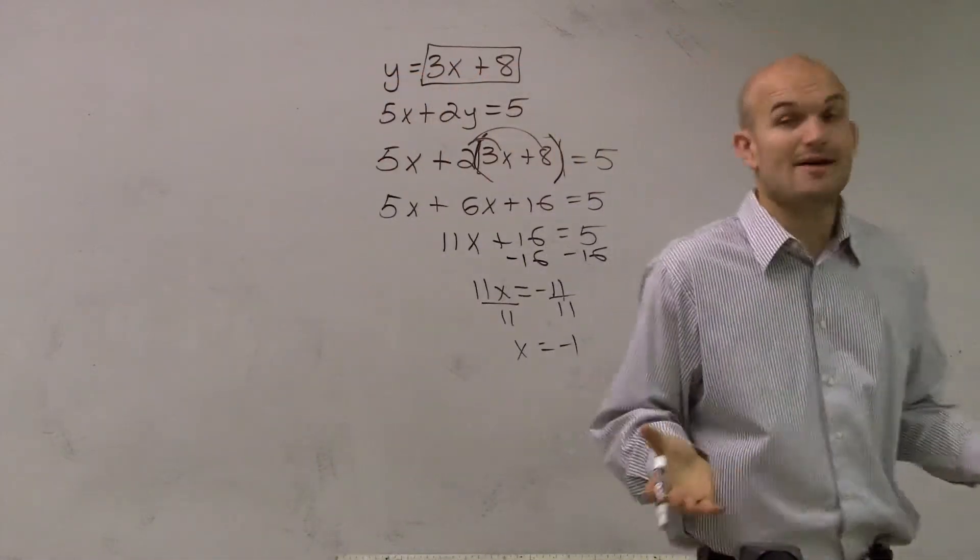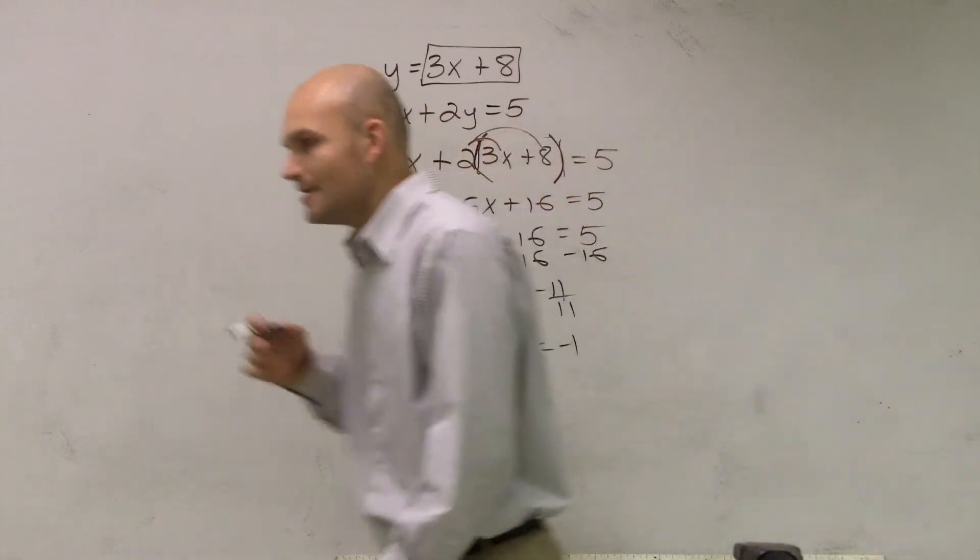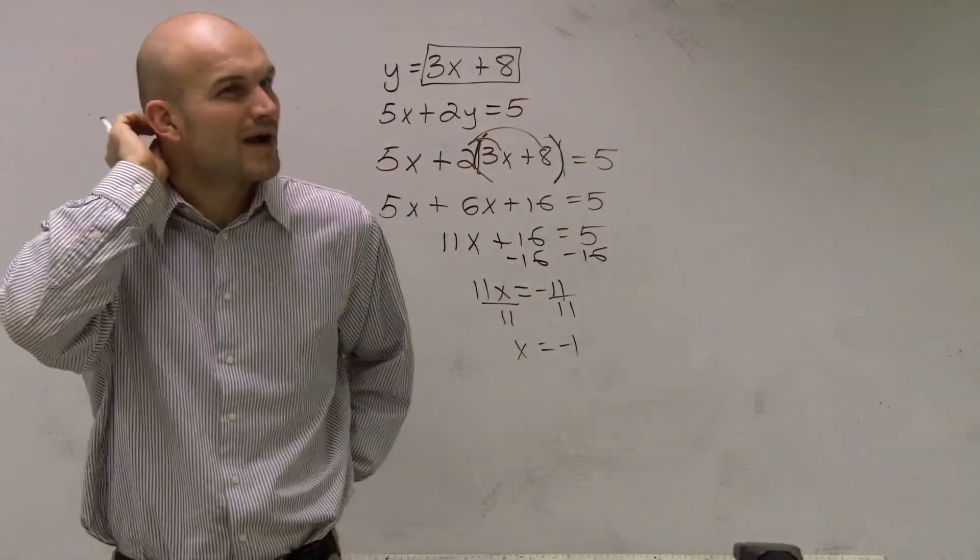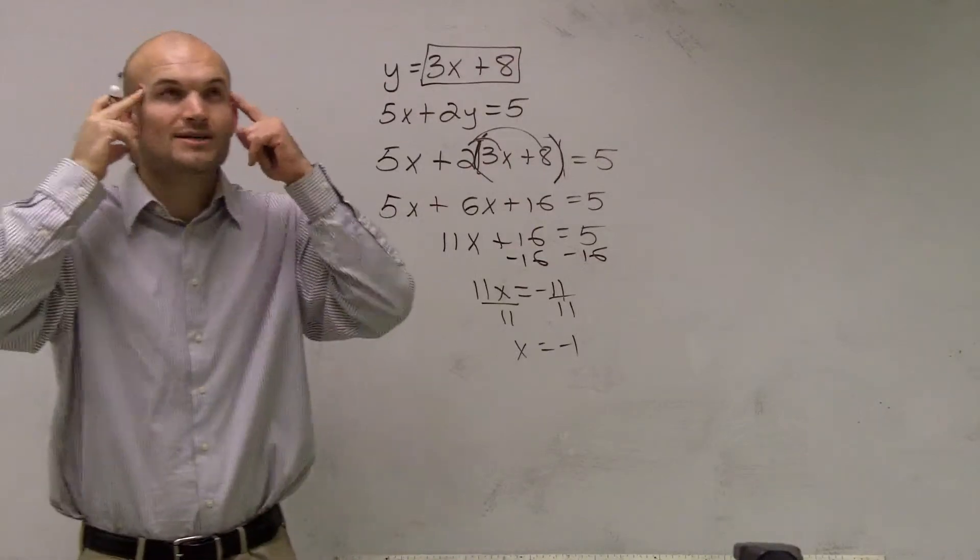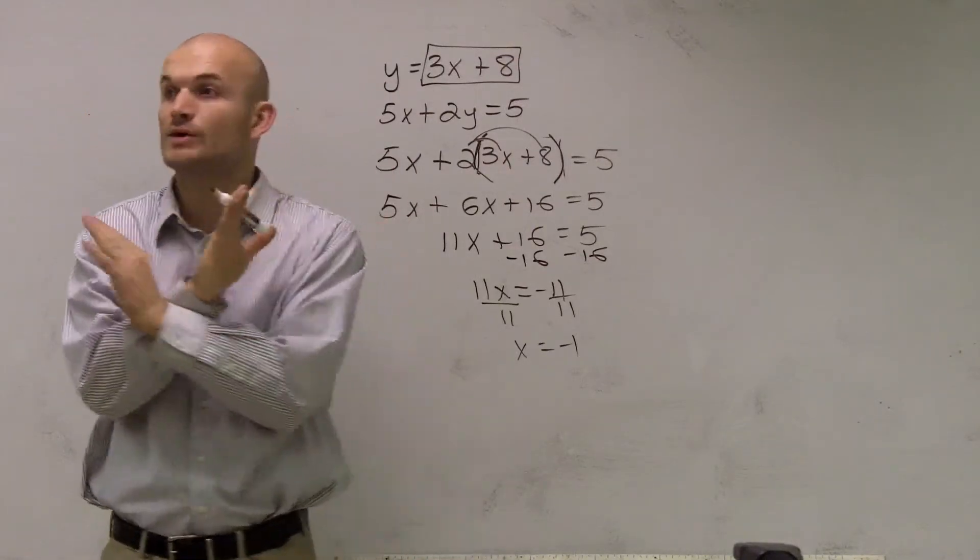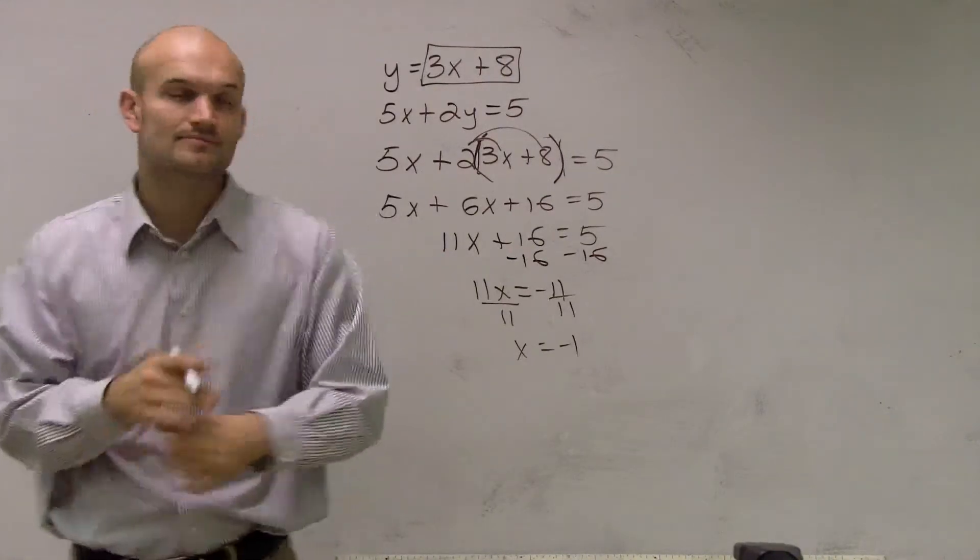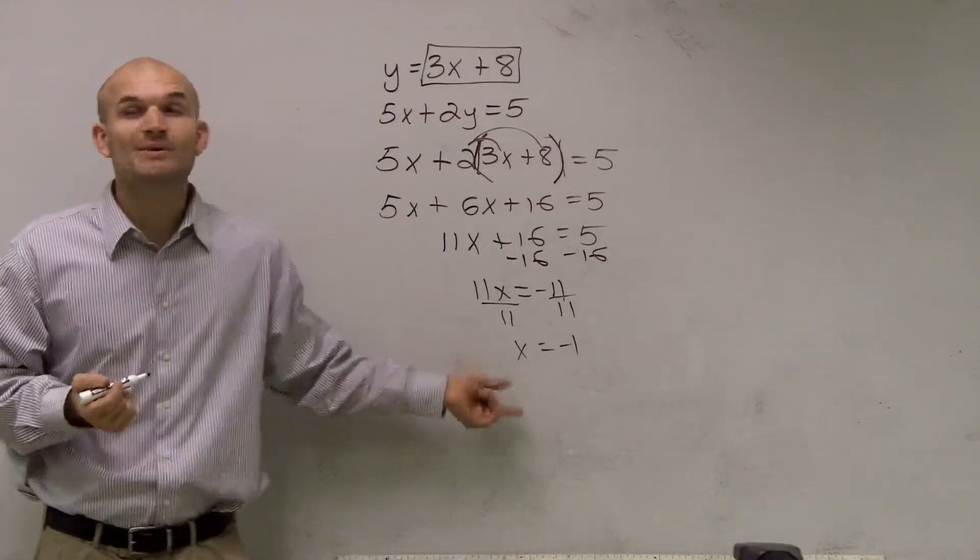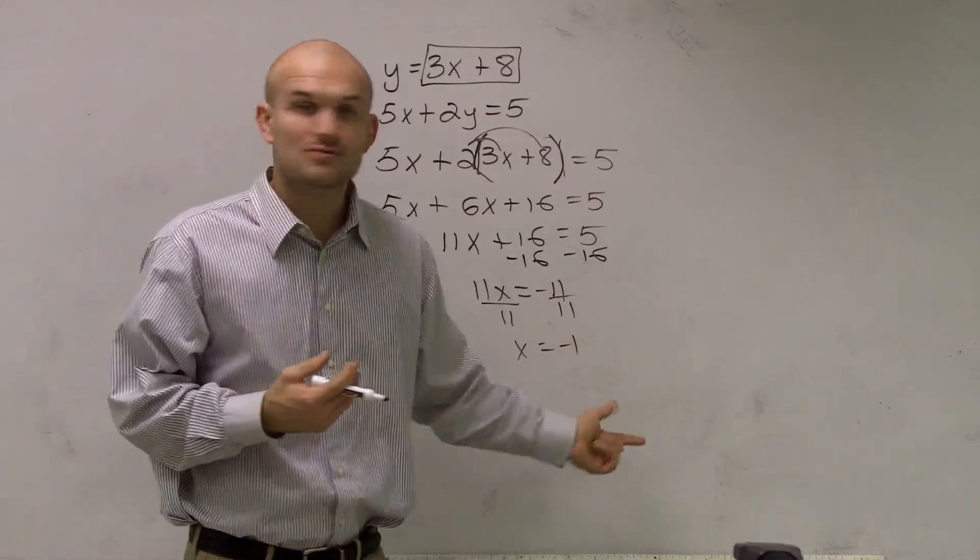All right? So we have x equals negative 1. We're almost done, right? Everybody's like, oh, yes. Oh, I'm done. But then we said, oh, crap. As Mr. McLogan said, when we're solving a system, we think back to graphing. And we said, oh, that system was where the two lines intersected, right? And we had an x and we had a y coordinate. So ladies and gentlemen, what we just found was the x coordinate. We need to figure out what is the y as well.